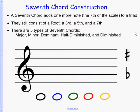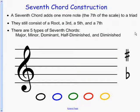There are actually five types of seventh chords: a major, a minor, dominant, half diminished, and diminished, or fully diminished.